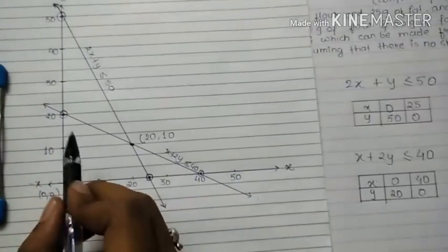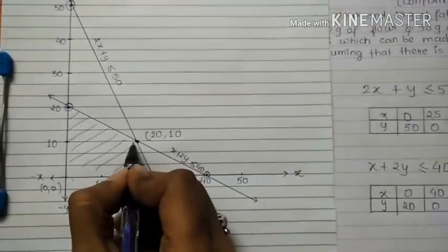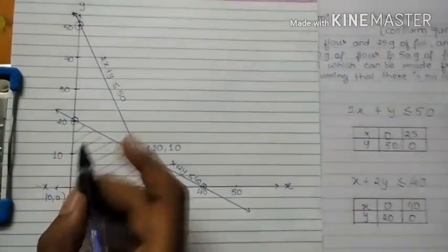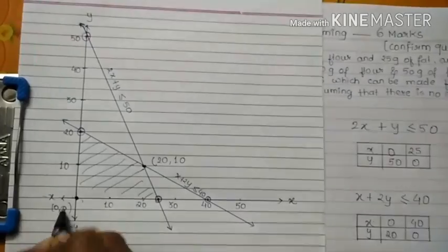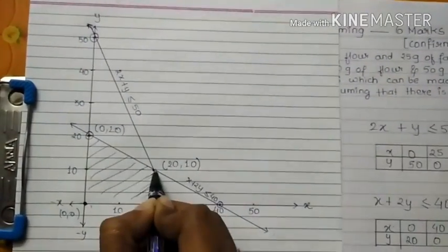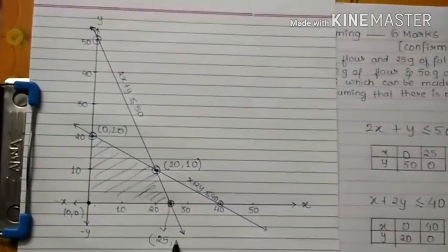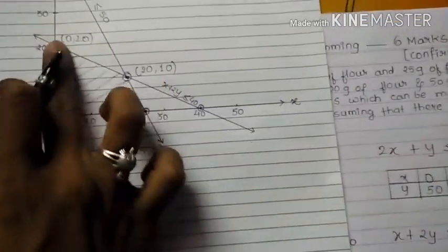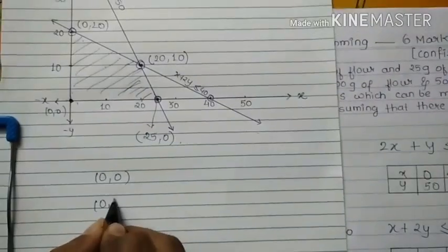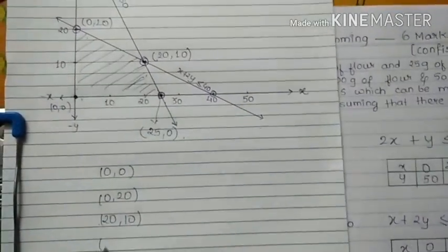Now I have to find the feasible region, which gives four corner coordinates. This is the feasible region because the constraints are less than or equal to, so I take the area below the lines. The feasible region has four corner points: (0, 0), (0, 20), (20, 10), and (25, 0).